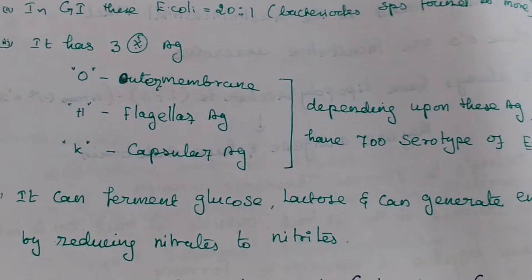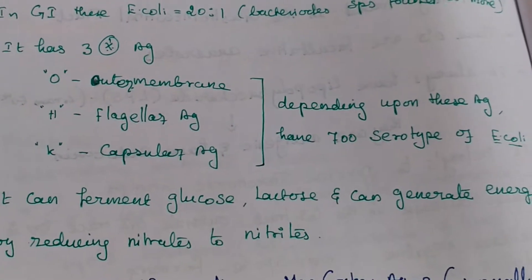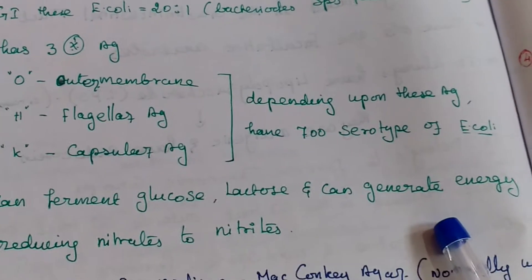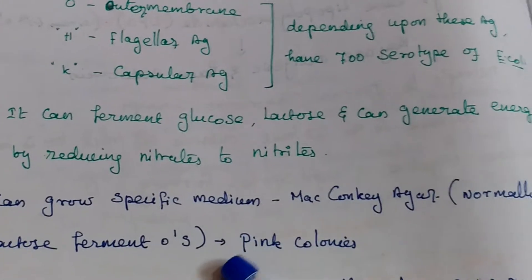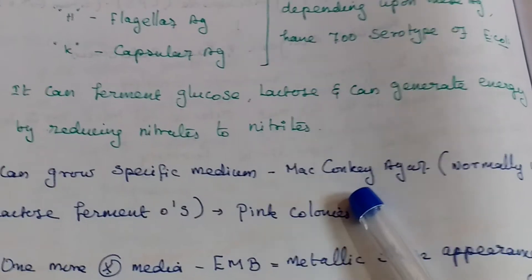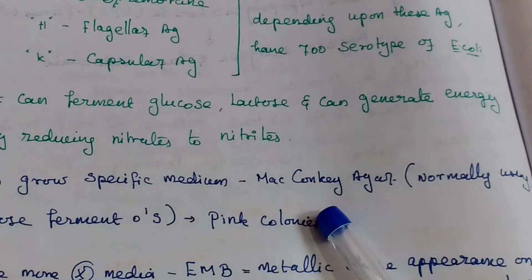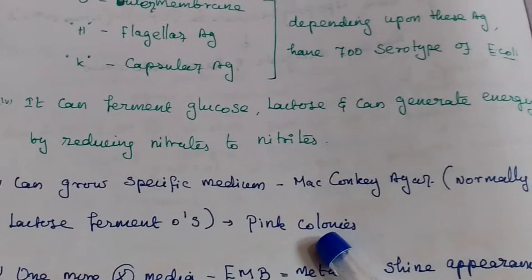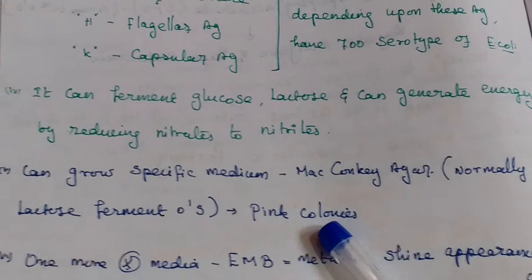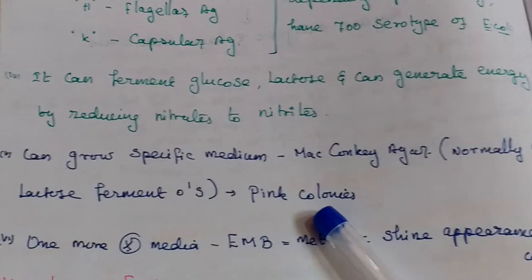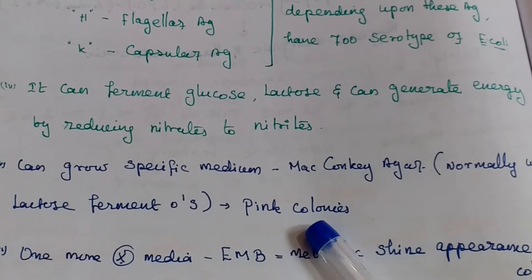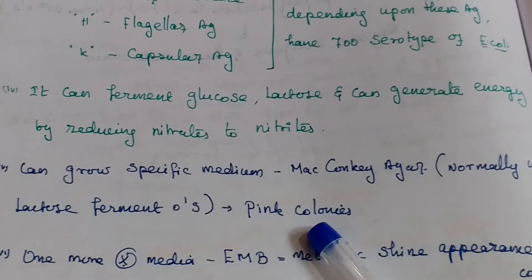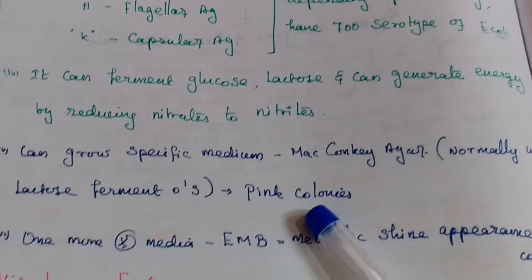This organism can ferment glucose and lactose, and can generate energy by reducing nitrate to nitrite. It can grow on MacConkey agar medium, which is used to differentiate lactose fermenting organisms from non-lactose fermenting organisms. Lactose fermenters produce pink color; non-lactose fermenters won't produce pink color.